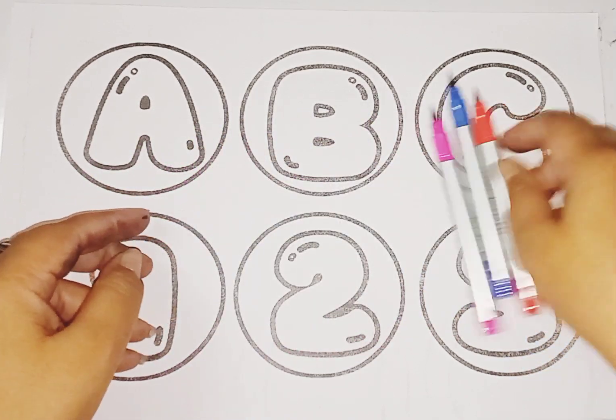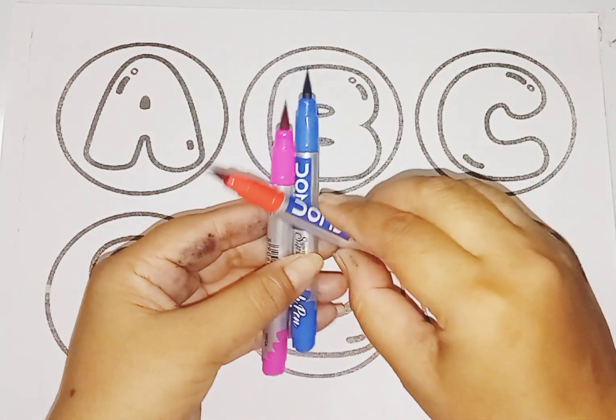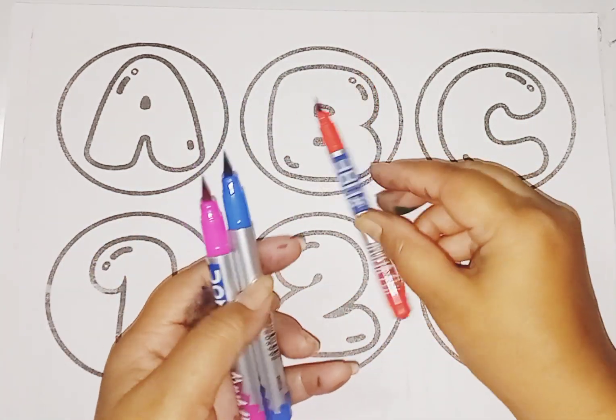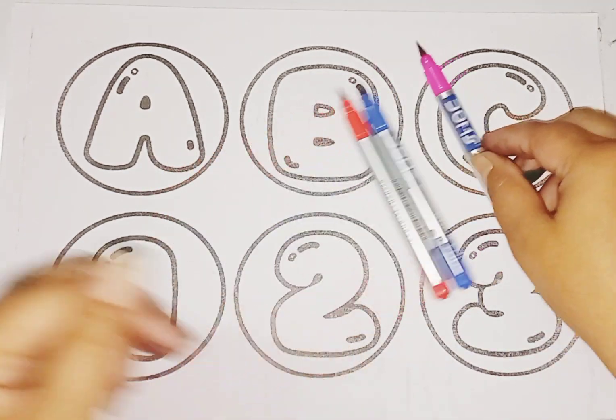These are colors. Cute, cute colors. Let's learn some colors name. Red color, blue color, pink color.